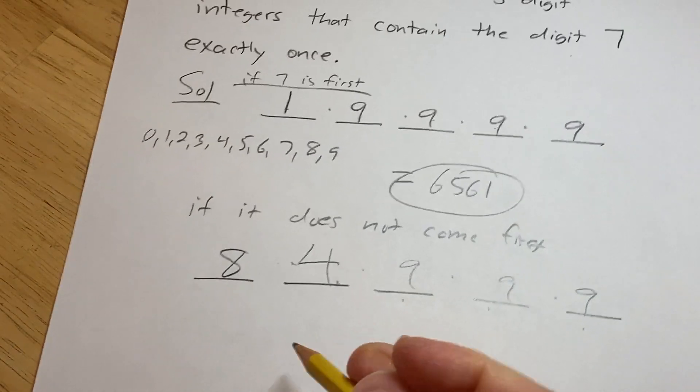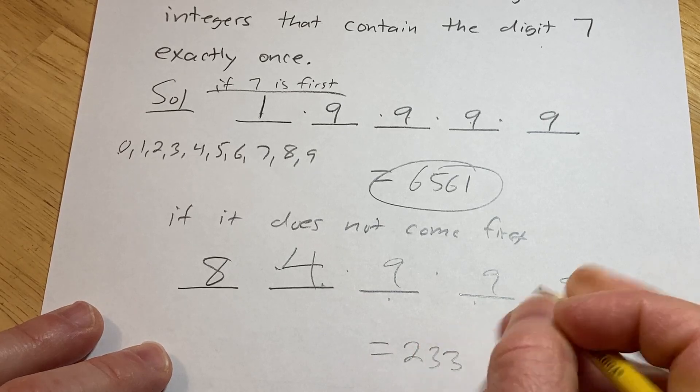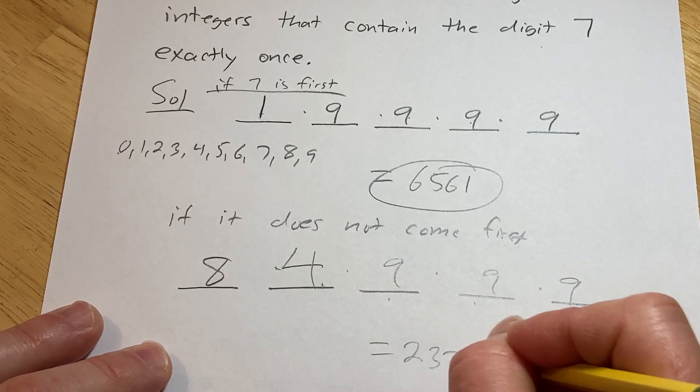So this product here would be 8 times 4 times 9 times, oops, 8 times 4 times 9 times 9 times 9. This would be 23,328 possibilities.